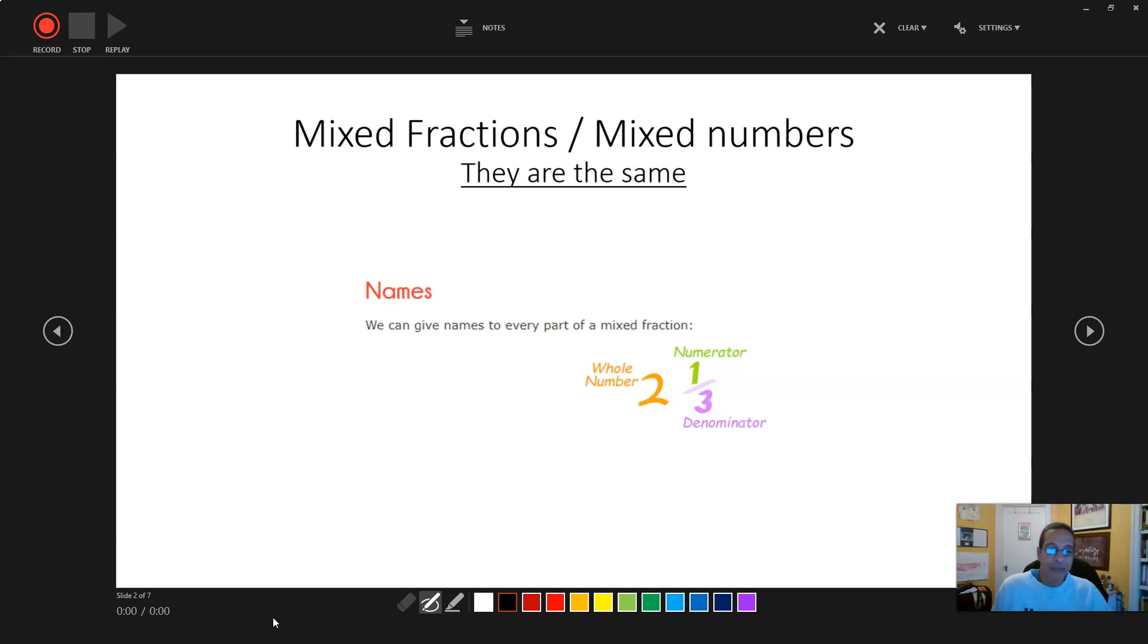For mixed numbers, there's a name for everything. You have your numerator, that's on top of the fraction. The denominator, that's on the bottom. And then you have your whole number, which is on the left hand side.